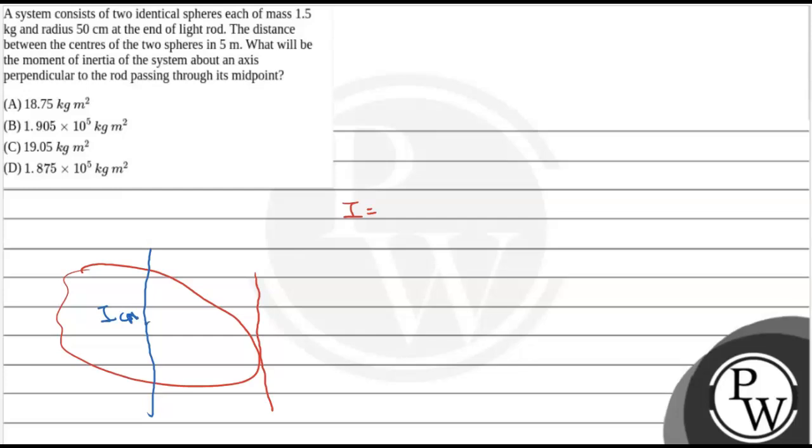Now, if the distance between these two axes is d and this rigid body has mass m, then according to parallel axis theorem, moment of inertia about this axis will be I_CM plus m d square.